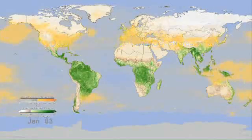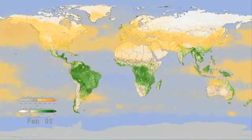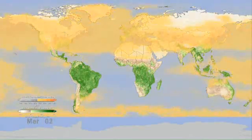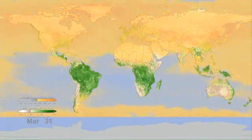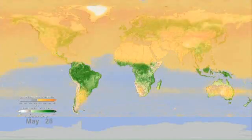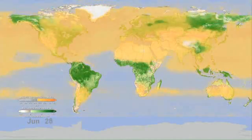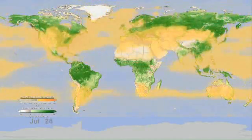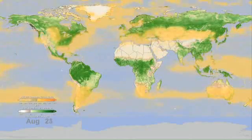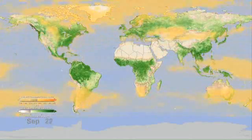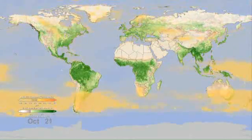Here we've taken out human sources of carbon dioxide to see the natural cycle of the gas as it's affected by the seasonal photosynthesis and respiration of trees and plants around the globe.